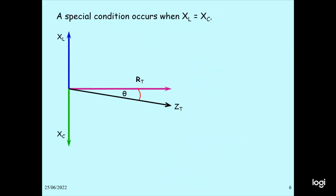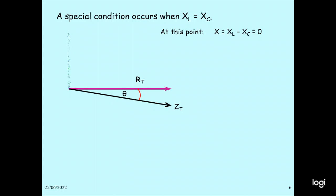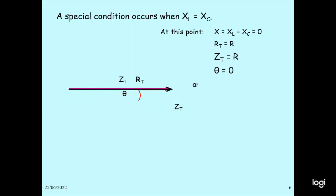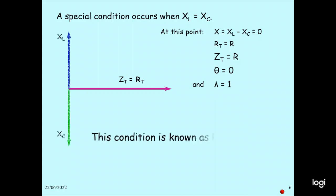The resonance condition occurs when XL equals XC. When XL equals XC, that is resonance. At this point, XL minus XC equals zero. Therefore Rd equals R, and Z equals R — these are equal and the power factor is one. So this is the special condition: when XL equals XC, that special condition happens and this condition is known as resonance.